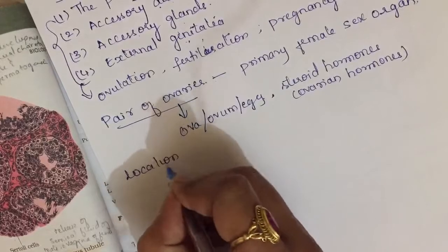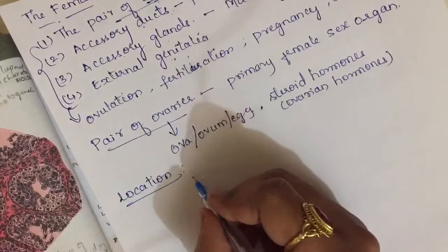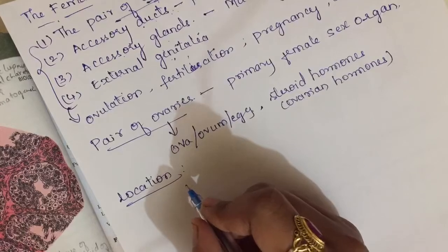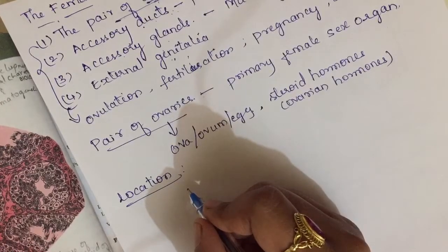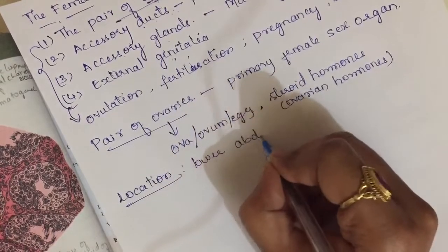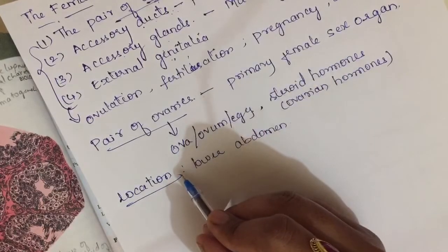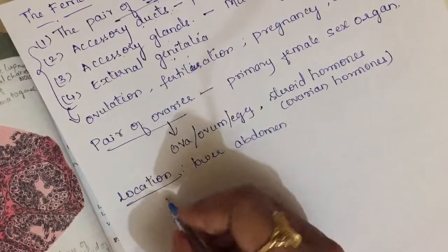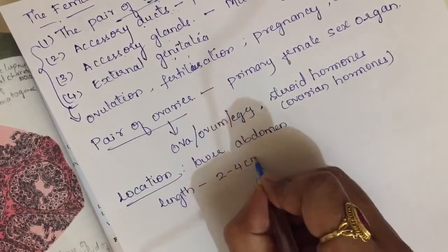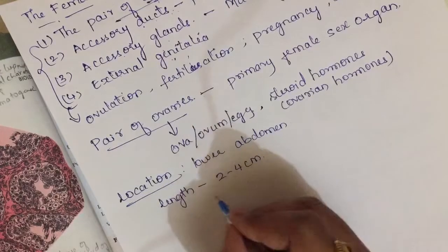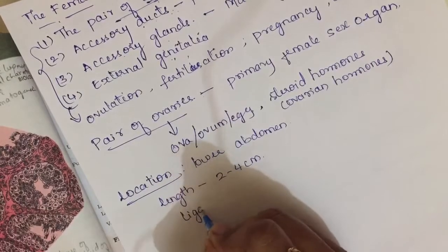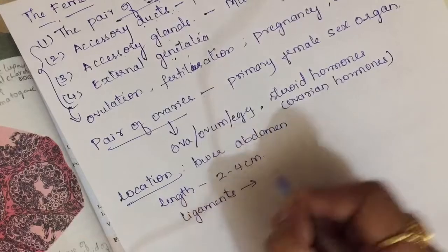Regarding the location of the ovaries: just as the male reproductive system is present in the pelvic region, the ovaries are also located in the pelvic region, in the lower abdomen. Each ovary is 2 to 4 centimeters in length and is connected to the pelvic wall through ligaments.